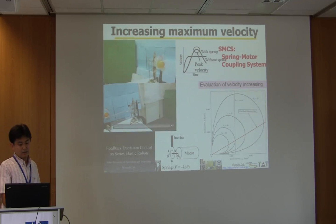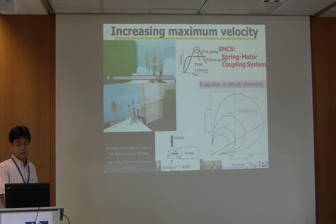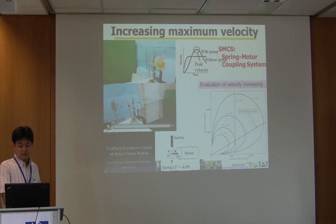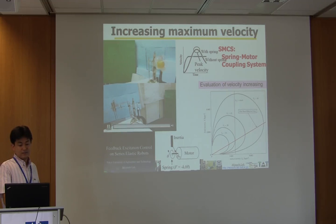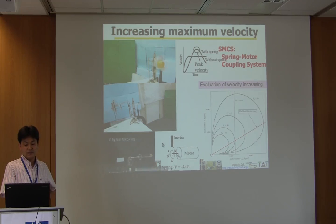This is a series elastic 1-DOF model. We use the motor characteristics for generating optimal input to maximize the velocity. It is difficult for more than 2-DOF systems because the inertial parameters change according to postures. We also want to utilize gravity energy for maximizing velocity.